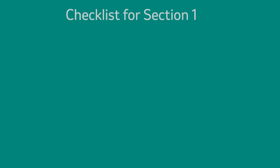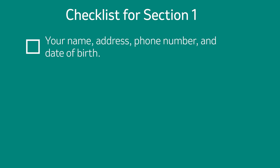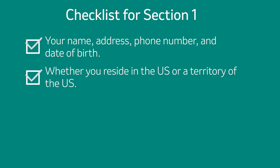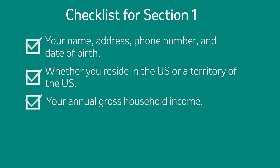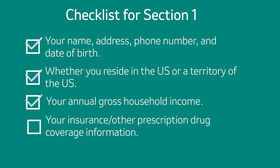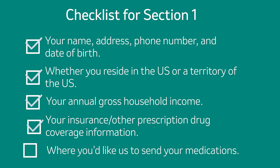Here is a checklist for Section 1. Did you enter your name, address, phone number, and date of birth? Whether you reside in the U.S. or a territory of the U.S.? Your annual gross household income? Your insurance and other prescription drug coverage information? Where you'd like us to send your medications?